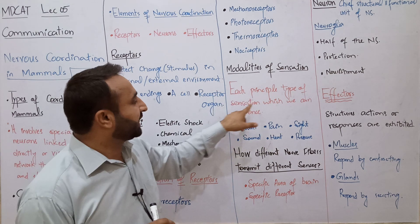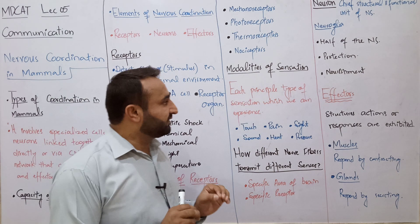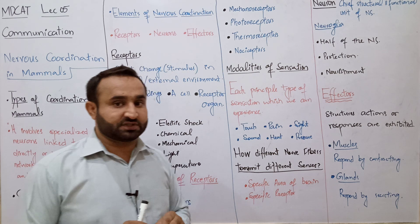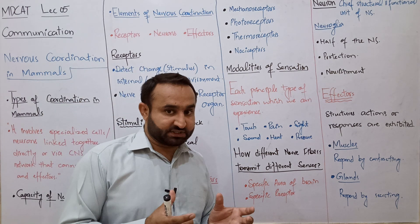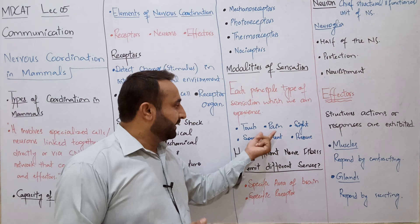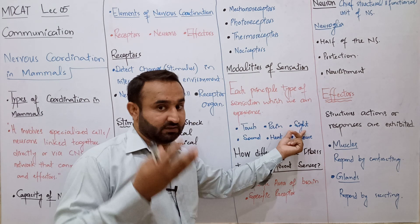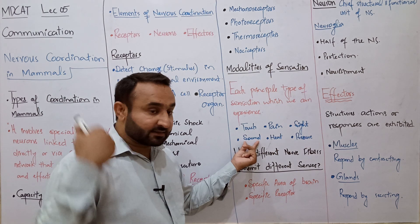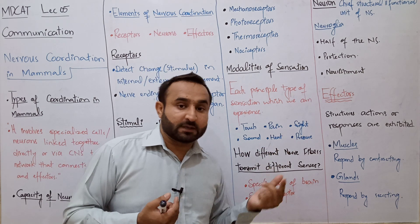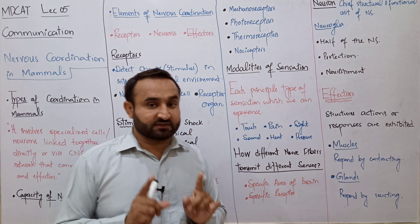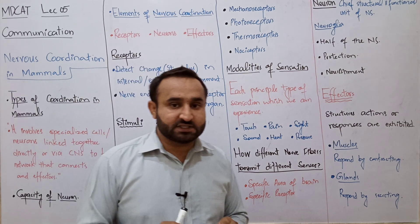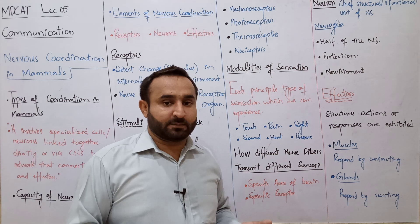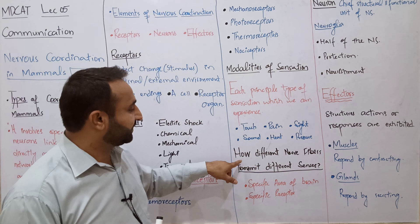Modality of sensation: each principal type of sensation which we can experience is called a modality of sensation۔ For example, touch is a modality of sensation، pain is a modality of sensation، sight، hearing، heat، and pressure are all different modalities of sensation۔ In short: each principal type of sensation we can detect in the internal or external environment is called a modality of sensation۔